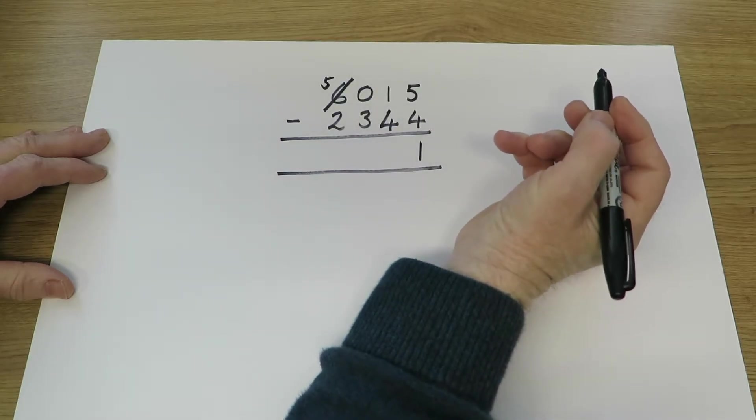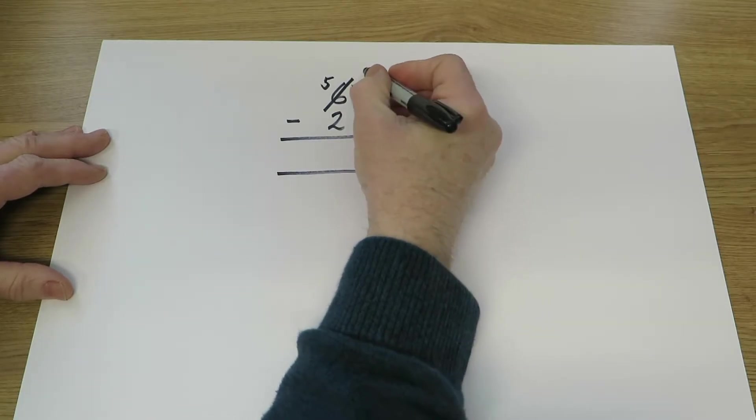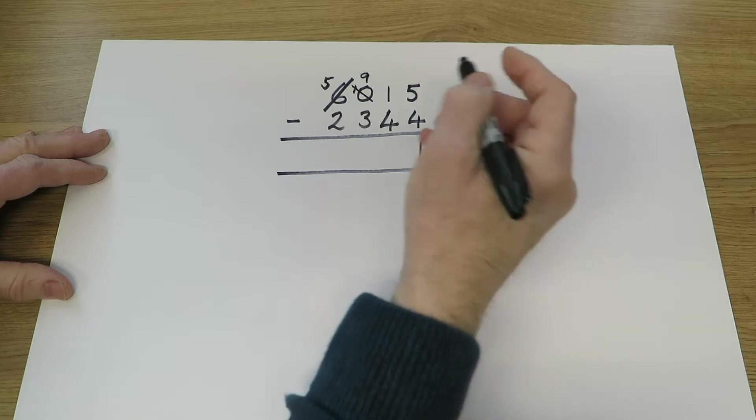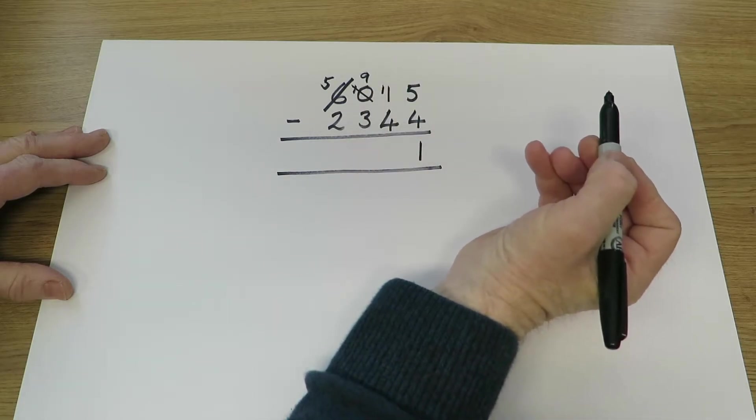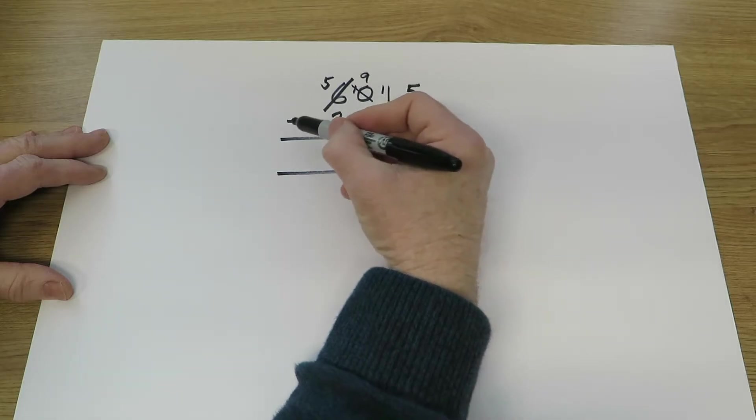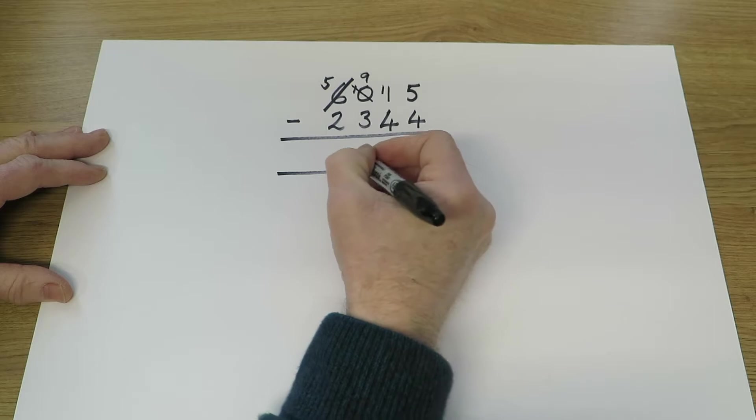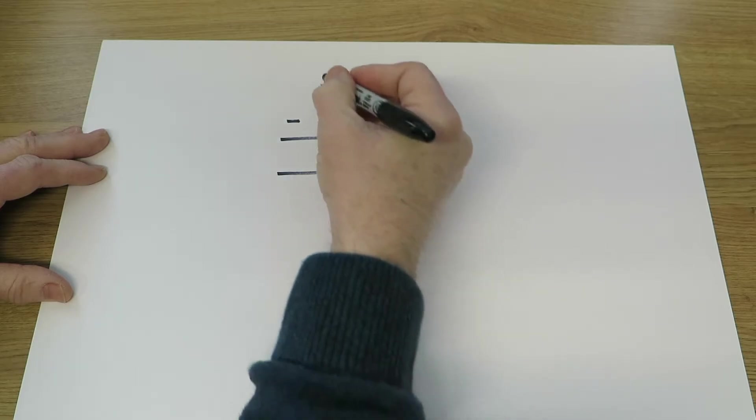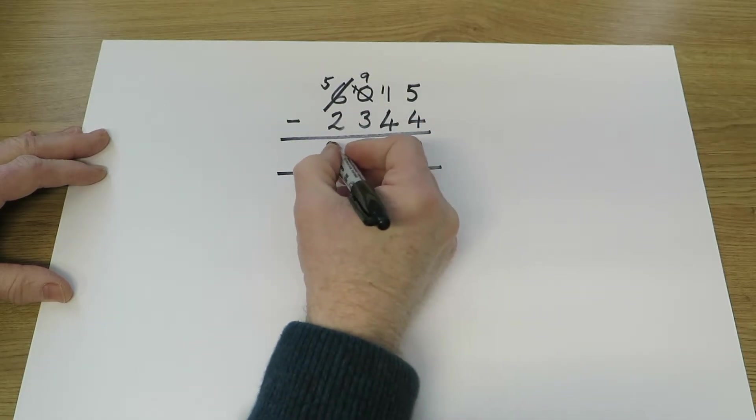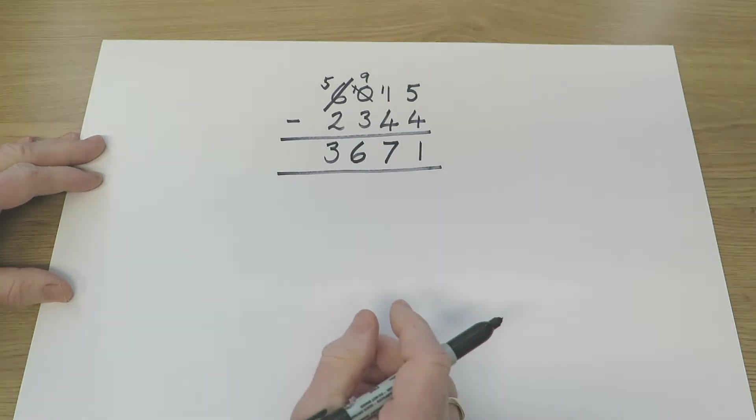So there are now 5 thousands and 10 hundreds. We're going to use one of those hundreds, so there are now 9 hundreds. That gives us 10 extra tens. So now the process becomes quite simple. 11 take away 4 gives us 7 tens. 900 take away 300 gives us 6 hundreds. And 5 thousands take away 2 thousands gives us 3 thousands. 3,671.